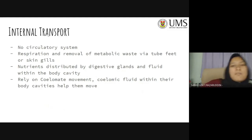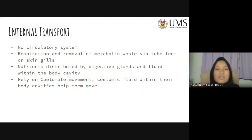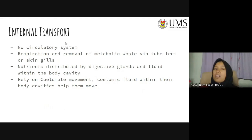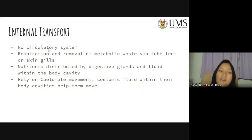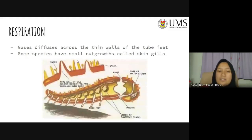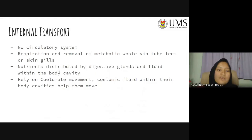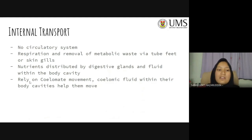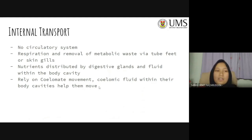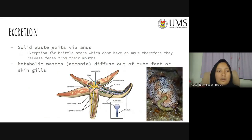For internal transport: starfishes, sea cucumbers, sea feathers — all organisms under this phylum — do not have a circulatory system, meaning they don't have blood running through veins. Instead, these organisms carry out respiration and removal of metabolic waste via their tube feet and skin gills. Nutrients are distributed by digestive glands and fluid within their body cavities, and they rely on coelomic fluid movement to help them function.